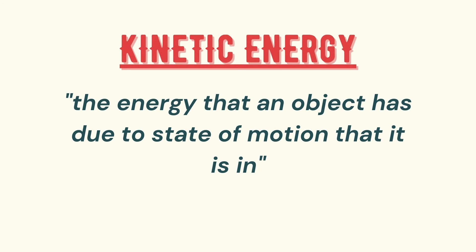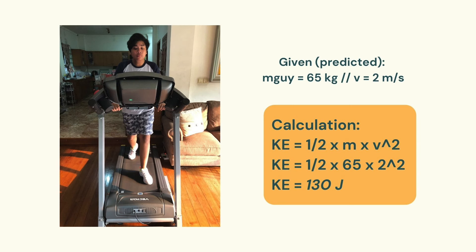The second energy to discuss is kinetic energy — the energy that an object has due to its state of motion. In the case of this photo, the guy running on the treadmill contains kinetic energy because he is in motion. Predicting that the mass of the guy is 65 kilograms with a velocity of 2 meters per second, we can calculate kinetic energy with the formula KE = ½ × M × V². Replacing with the numbers: KE = ½ × 65 × 2², giving a total kinetic energy of 130 joules.